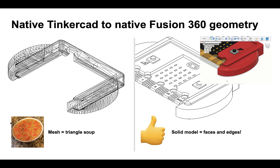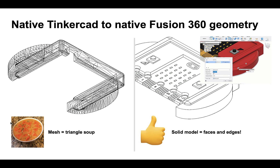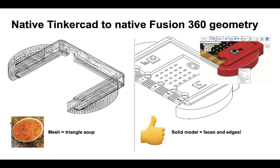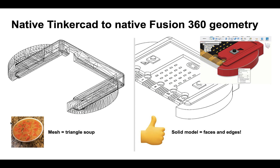When you go to a solid model, like the one on the right, you have a fully mathematically defined model in which you actually have an edge that you can eventually modify. On the mesh, you cannot edit this edge because it's not actually a real edge — it's a bunch of little facets whose edges or vertices converge into something that looks like an edge. It's unusable for mechanical design without major reverse engineering, although it might be okay for rendering.